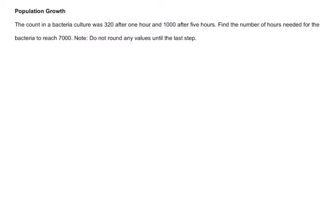All right, so take a moment, read the problem, and then press play and we'll solve it together. We're told here that we're dealing with population growth, and we've got the count for a bacteria culture at 320 after one hour, and then 1,000 after five hours. We want to know how many hours it will take for it to reach 7,000.